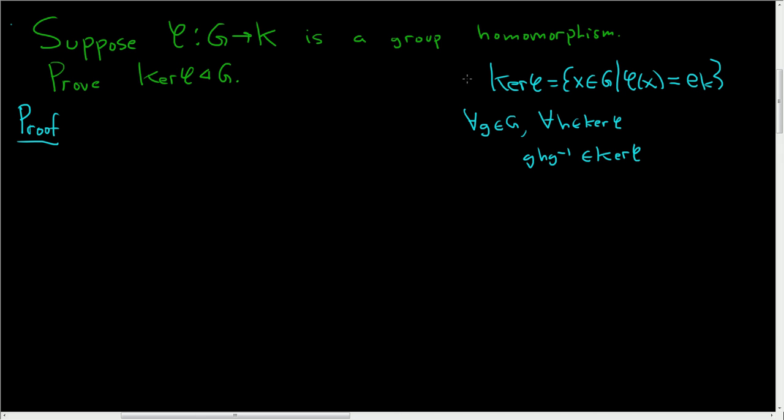So let's keep going with this, and it gives you insight in how to do the proof. So ghg inverse being in the kernel of phi, well, if x is in the kernel of phi, that means phi of x is the identity in K.